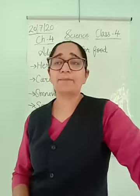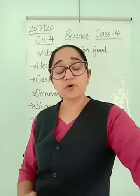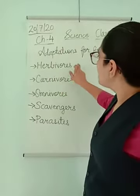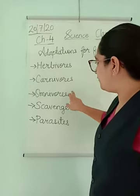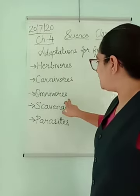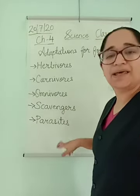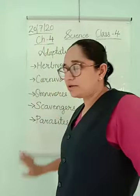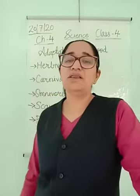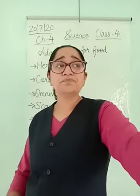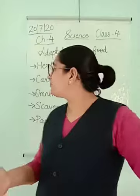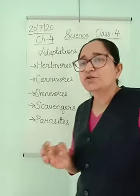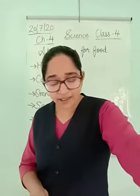According to the food they eat, animals are categorized as herbivorous, carnivorous, omnivorous, scavengers, and parasites. Today we are going to learn about all these terms. You have probably heard of the first three, so let's go through them once again.